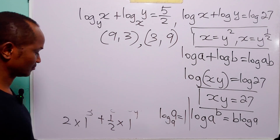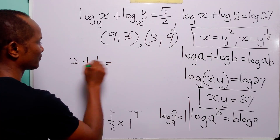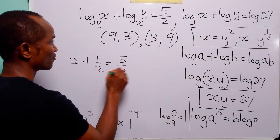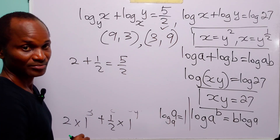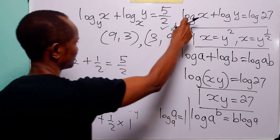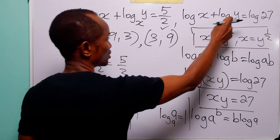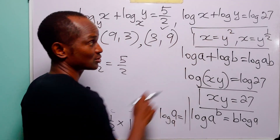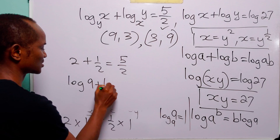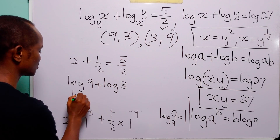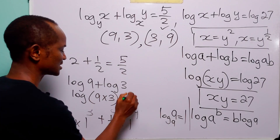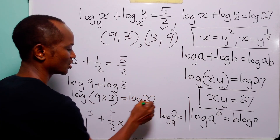Since log to base a of a equals 1, this gives 2 times 1 plus one half times 1, which is 2 plus one half. That equals 5 over 2, which is correct. And log 9 plus log 3 equals log(9 times 3) equals log 27, which also checks out.